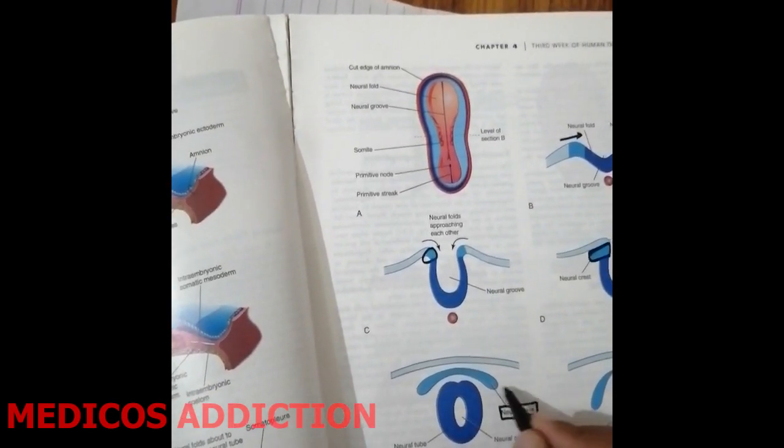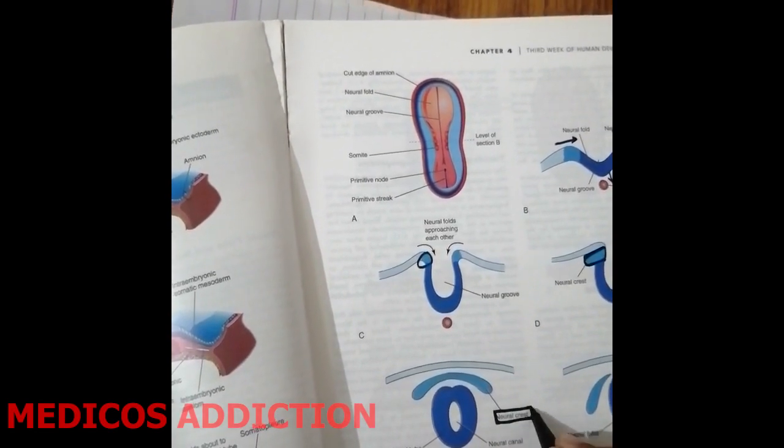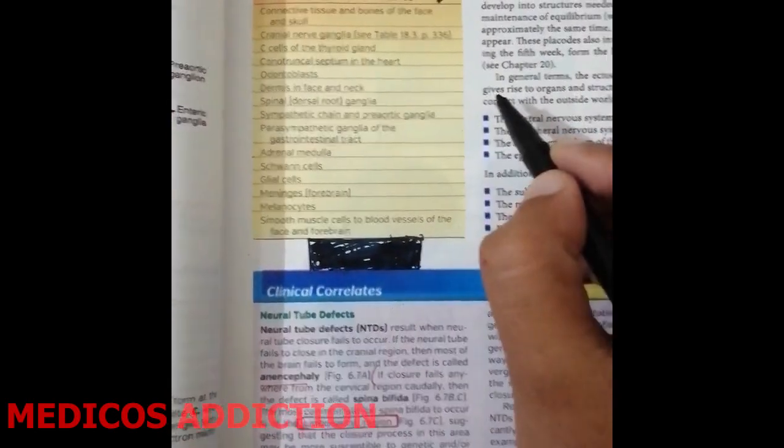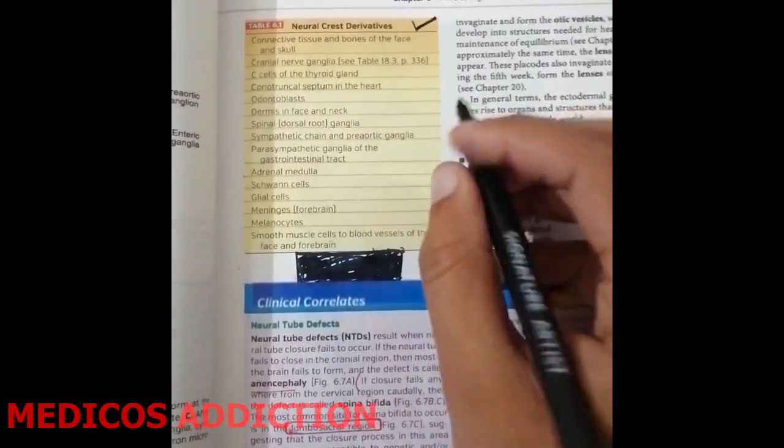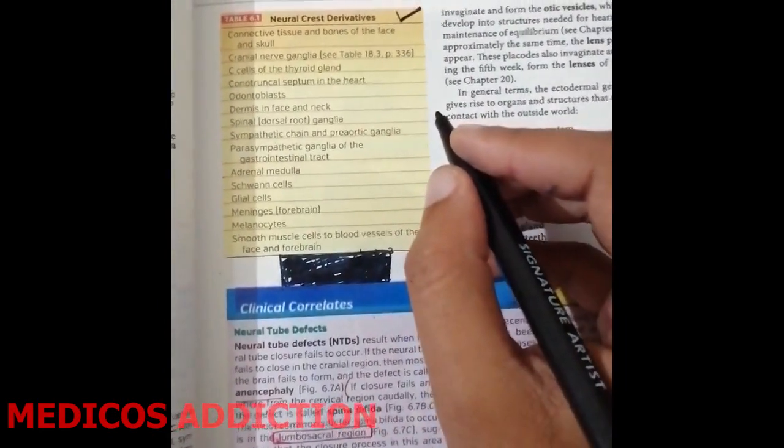The formation of neural crest cells is complete in this diagram. These are the structures which are derived from the neural crest cells. This table is given on page number 2077 of Langman. Now I will show you a trick to remember all these structures very easily.